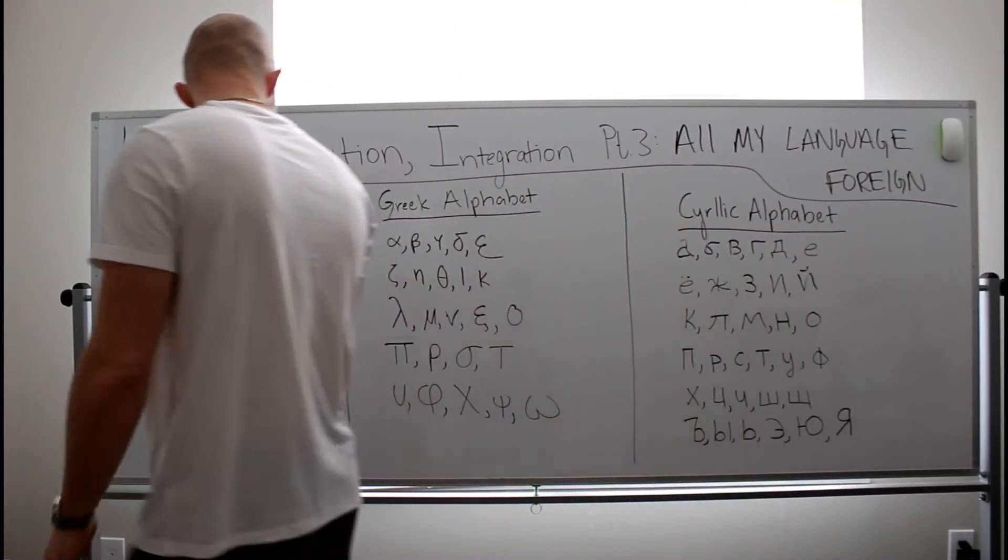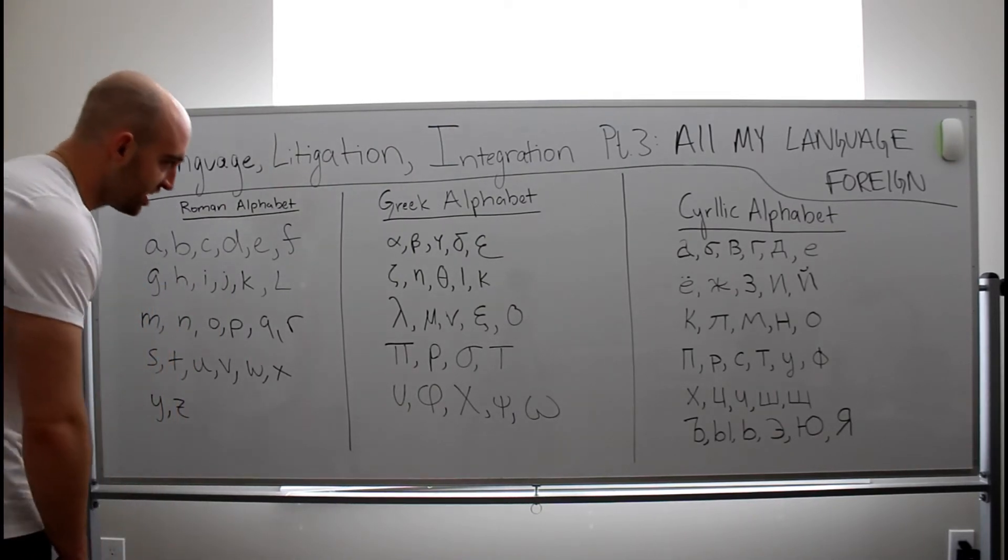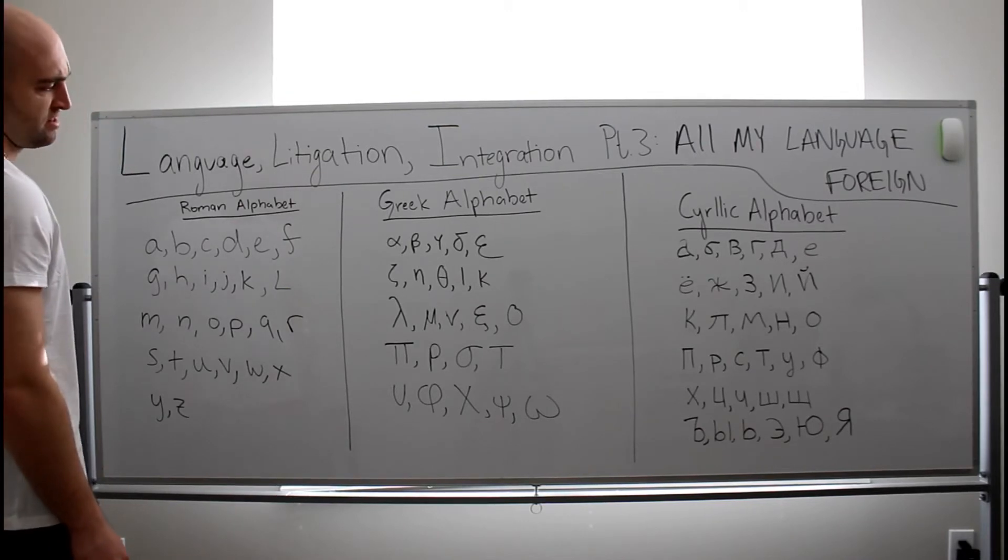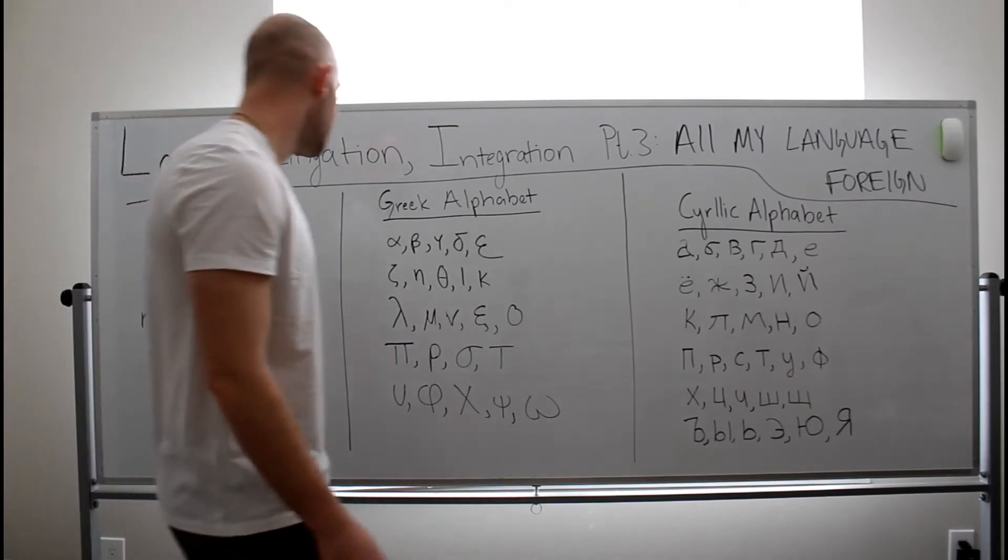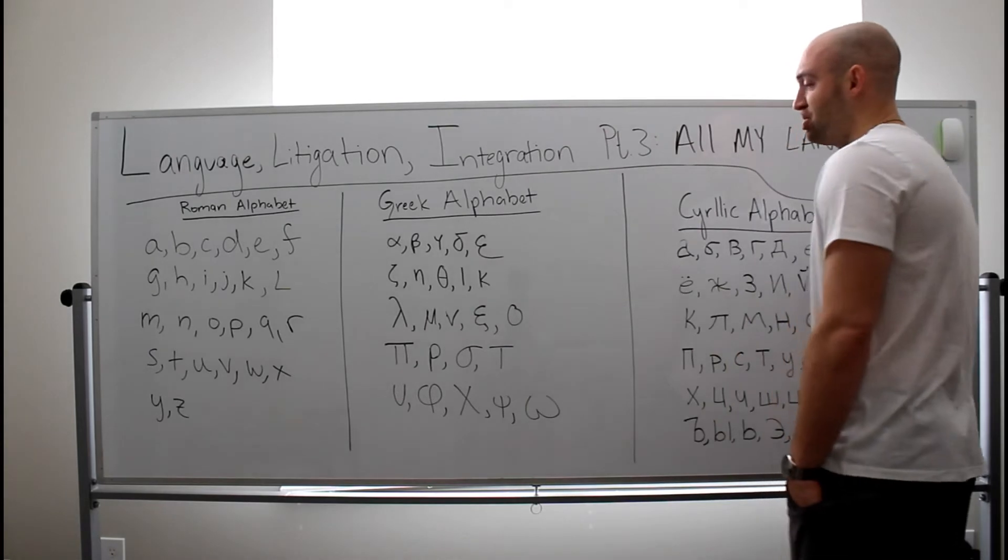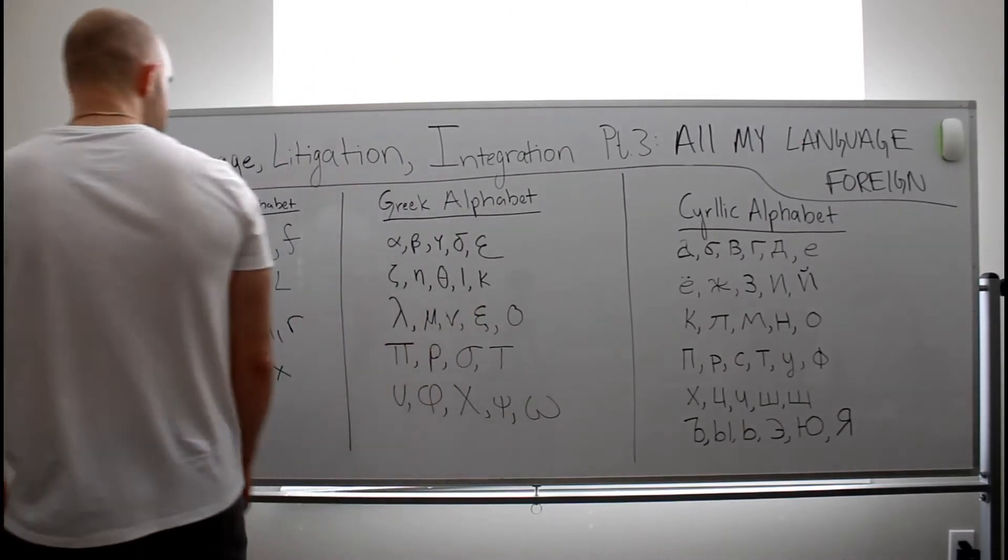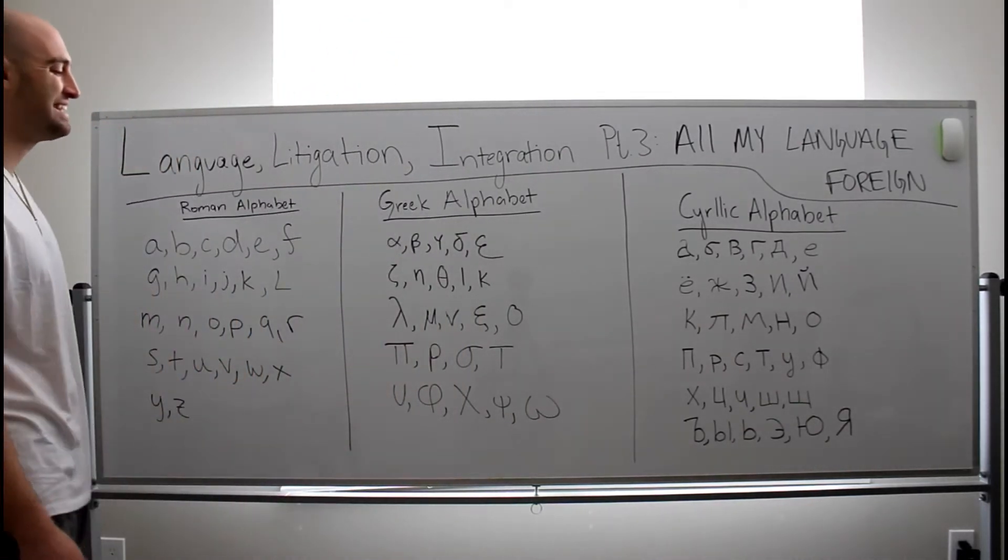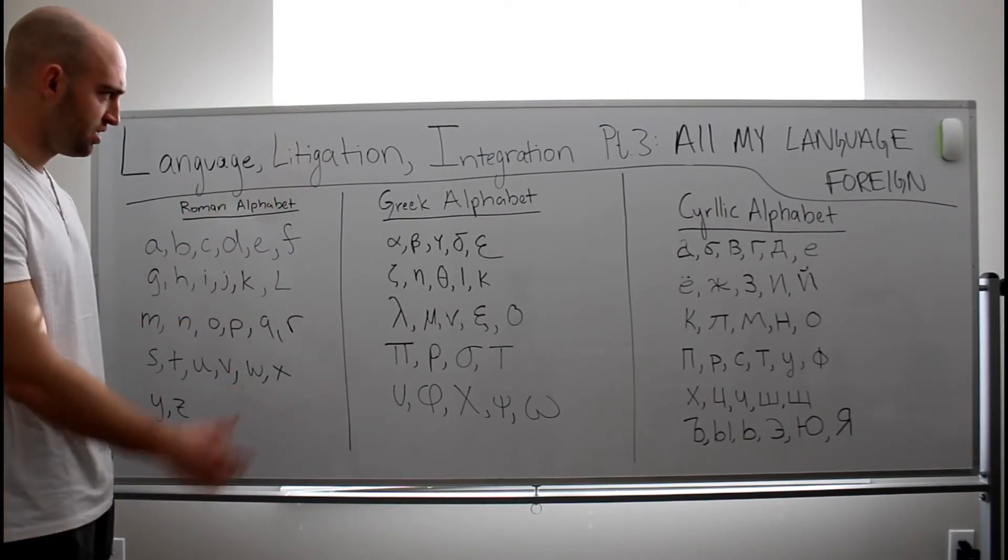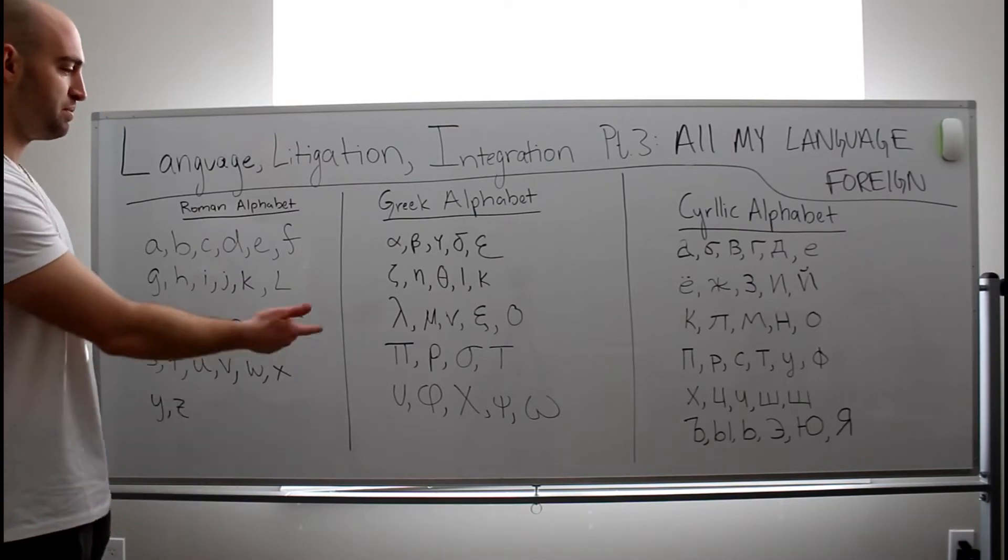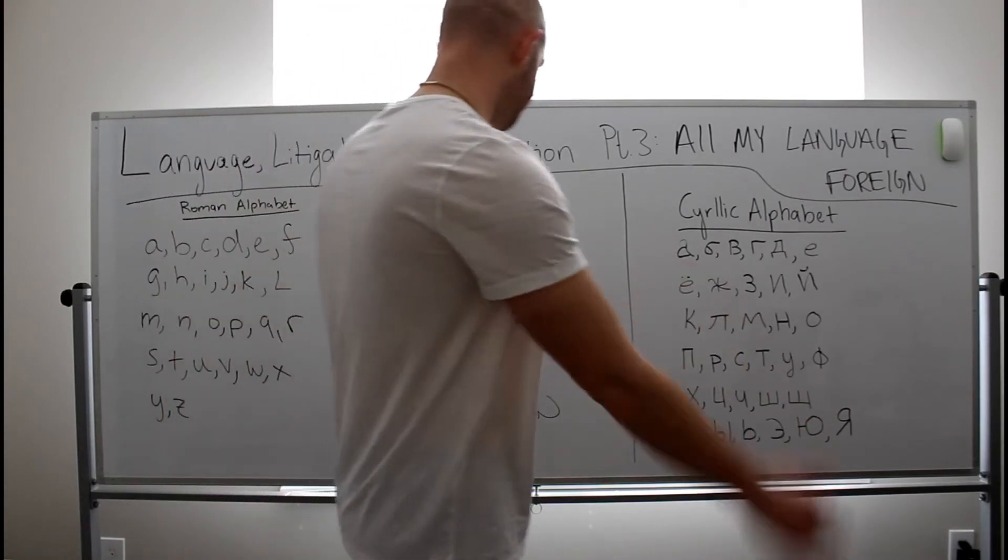Now, if we pop over to Greece, modern Greece, we have alpha, beta, gamma, delta, epsilon, Z, E, Z, Y, K, L, M, N, X, O, P, R, S, T, F, Y, F, Y, C. Excuse me, I'm going to try not to raise my voice, but clearly I'm not very familiar with this alphabet. Psi. People would call that psi in English, but it's psi. Then omega, not gamma.